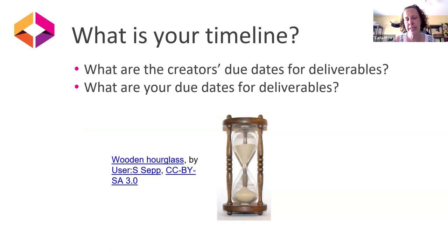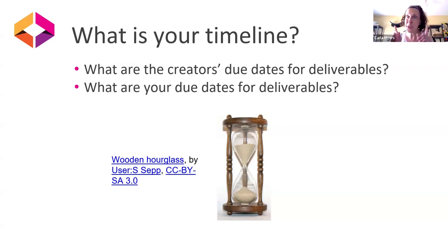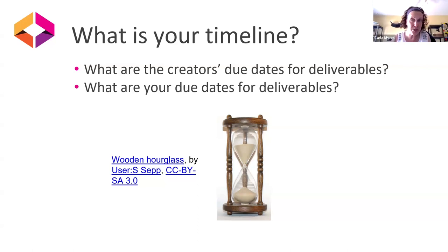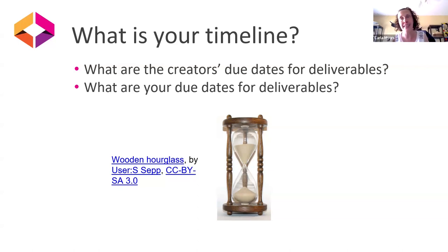What is your timeline? This is a really important part of the MOU because, aside from nuanced things like citation formats, deadlines are the biggest issue I run into when working with faculty authors. What are their deadlines for deliverables? Is everything due at one particular date, or will they submit materials incrementally? And what are your due dates for getting things back to them — for copy editing turnaround, and for layout and final pre-publication steps? That might be dependent on the size and scope of the project.